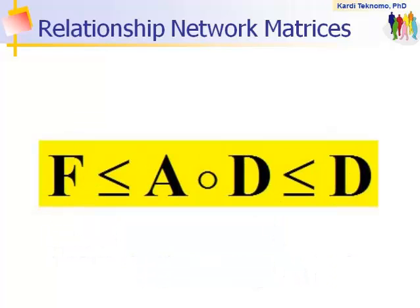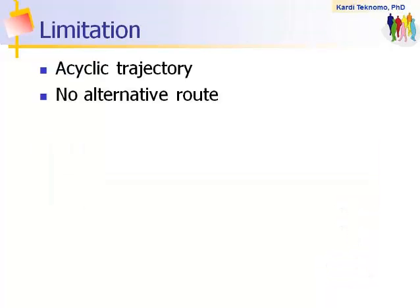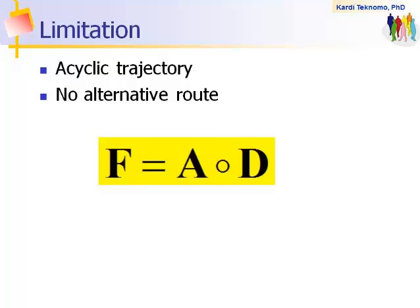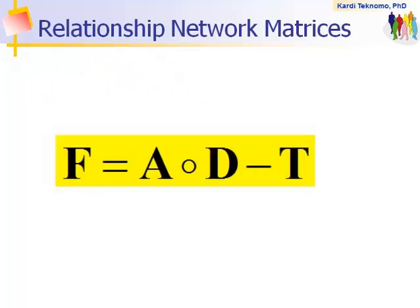This formula implies the flow matrix always contains lower information than the OD Matrix. As a limitation, this formula works only for simple acyclic networks with no alternative routes. Our full formula for more general network contains another matrix T, that we will discuss in the next video.